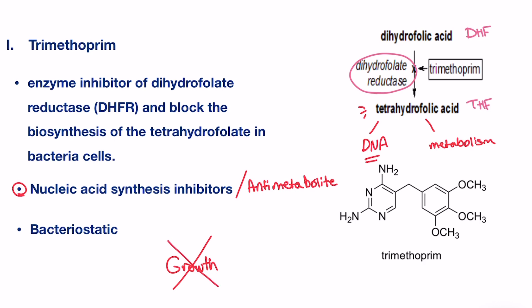Hence, trimethoprim is considered a bacteriostatic antibiotic rather than bactericidal. The chemical structure of trimethoprim is shown here. It has a unique diaminopyrimidine structure.